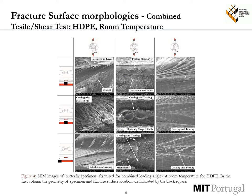The microstructure deformation mechanisms of butterfly specimens when loaded in combined loading angles at room temperature and at 50°C show different modes of deformation mechanisms such as crazing, voids, and cavitation deformation being observed.